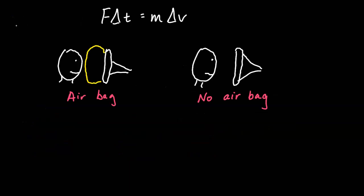The impulse-momentum theorem helps us understand how airbags work. On the left is a situation with an airbag; on the right is a situation without one. In both situations the vehicle is traveling at the same speed and coming to a stop, so the change in momentum is the same on both sides. With an airbag, the collision occurs over a longer period of time, so the force is smaller. Without an airbag, the collision between the head and the steering wheel is a shorter time and produces a larger force. To minimize the impact force, we want to increase the amount of time, which is what the airbag does.